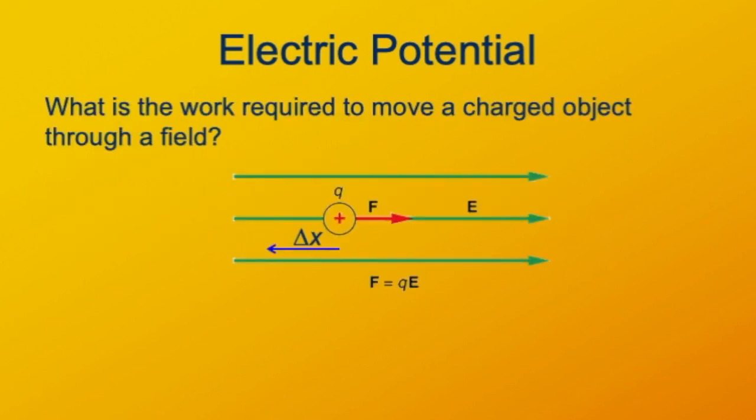Let's imagine here we're showing a uniform electric field that's directed to the right as denoted by the green arrows. And we have a charge with charge plus Q on it. The electric field E is exerting a force F on the test charge that has a magnitude of Q, the charge, times E, the field.